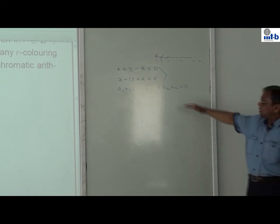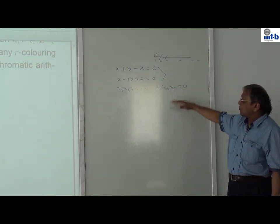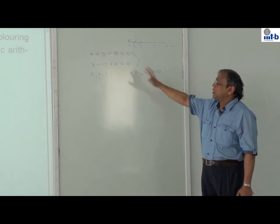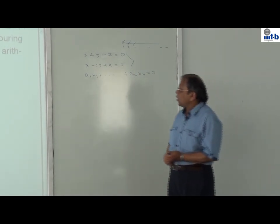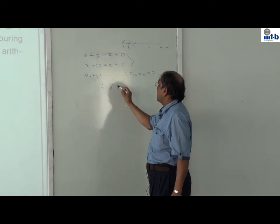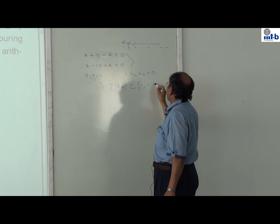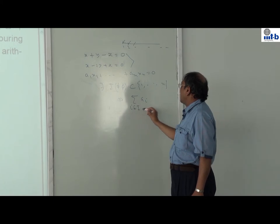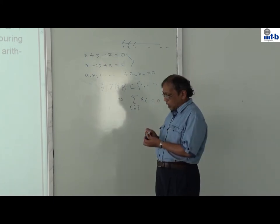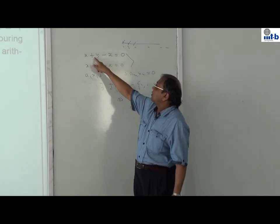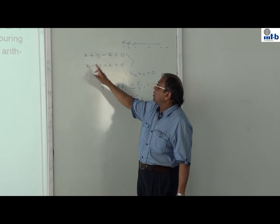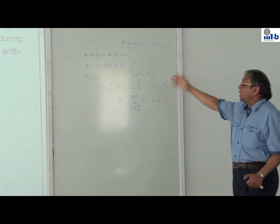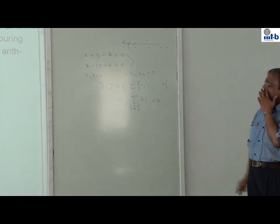There is Rado's theorem about when a system of linear equations is regular. Regular means for every finite coloring there is a monochromatic solution. This is if and only if there exists some nonempty set I of the index set {1,2,...,n} such that the sum of aᵢ for i in I equals 0. Meaning the sum of the coefficients sum up to 0. Here take 1 and -1 to get 0; here take 1, -2, and 1. This is one generalization, and there are further generalizations.